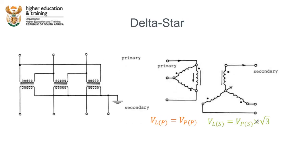The fourth configuration is to connect the transformer as a delta-star. The primary is connected in a delta configuration and the secondary in a star configuration. For the delta primary, line voltage equals phase voltage. For the star secondary, line voltage equals phase voltage multiplied by the square root of three. On the primary side the end of each coil connects to the start of the next, and on the secondary side the ends of all three coils connect to the same point — from which we very often take an earth or neutral.